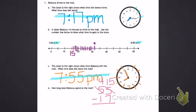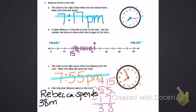7, 8, 9, 10, 11, 12, 13, 14, 15. That gives me 8. Then I can subtract 4 minus 1, which is 3. Last, writing a sentence. Rebecca spends 38 minutes at the mall.